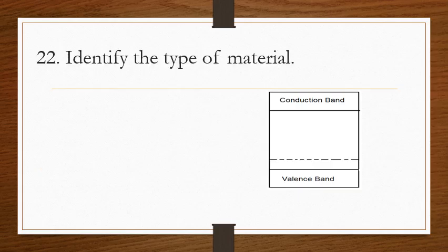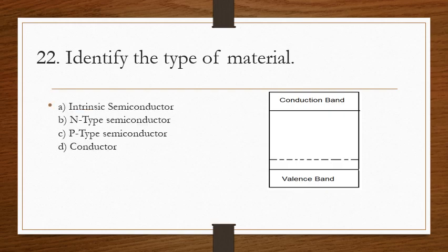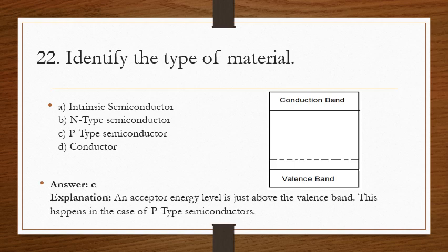Question 22: identify the type of material shown in the energy band diagram. The correct answer is C. An acceptor energy level is found just above the valence band, which is characteristic of P-type semiconductors.